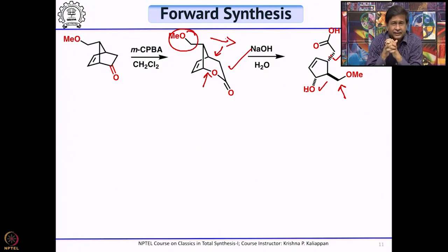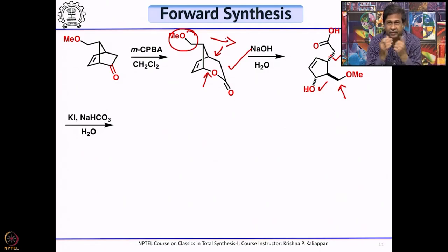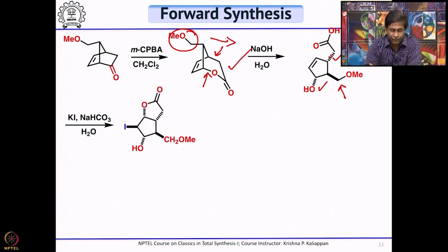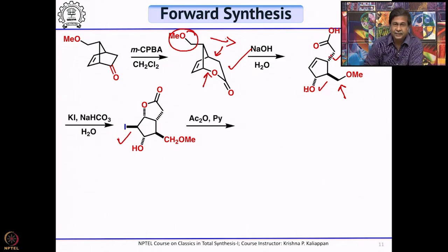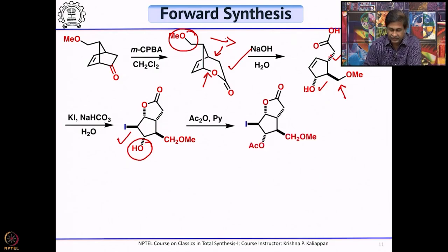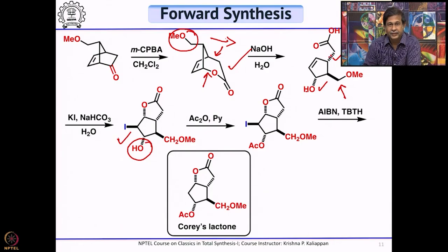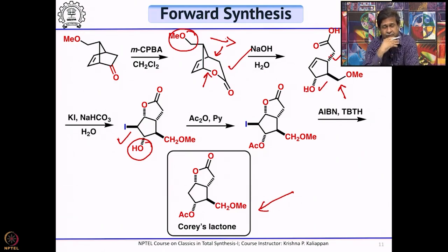Now you have the hydroxy carboxylic acid. The next step is iodolactonization, done by treating with potassium iodide and sodium bicarbonate. Sodium bicarbonate removes the proton of the carboxylic acid, potassium iodide forms an iodonium ion, and intramolecularly the carboxylate attacks to give the iodolactone. The iodine is then removed by treating with tributyltin hydride and AIBN, after first protecting the hydroxyl group as an acetate. The resulting lactone is called the Corey lactone — one of the most important intermediates in the total synthesis of prostaglandins.